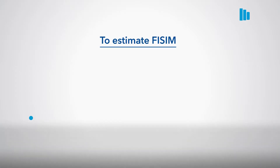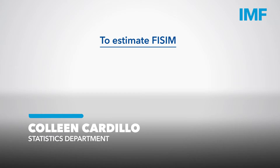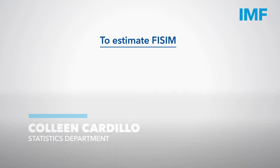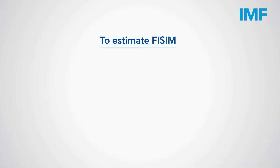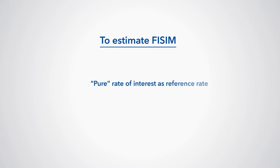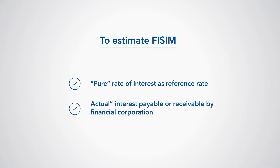To estimate Financial Intermediation Services Indirectly Measured, or FISIM, we need two main elements: the pure rate of interest as the reference rate, and actual interest payable or receivable by the financial corporation.